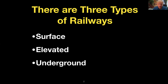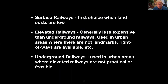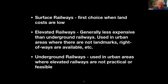To start, there are three types of railways: surface, elevated, and underground. Surface railways are really the first choice when land costs are low. Elevated railways are generally less expensive than underground railways, but are used usually in urban areas where there are not a lot of landmarks, right-of-ways are available, and they can build structures that go overhead. Underground railways or subways are used in urban areas where you just really can't put an elevated railway, but they are the most expensive.